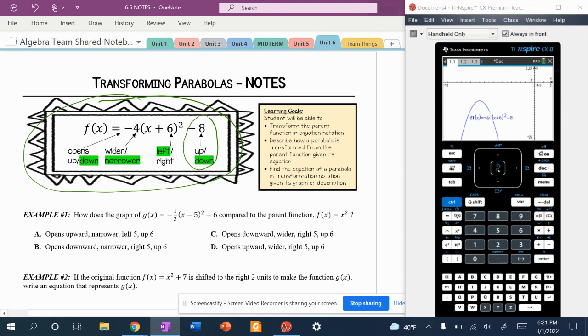Another one is we have the number 4. Technically, we have negative 4, but let's focus on the 4 first. Whenever it is a whole number, like 4, your parabola is going to get more narrow. Whereas if it was a fraction, such as one half, it would get wider.